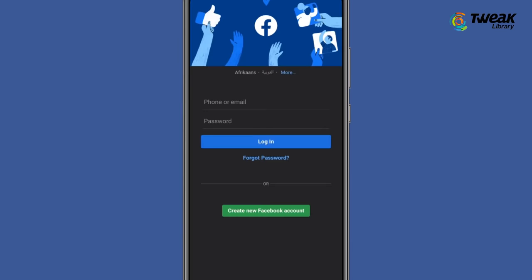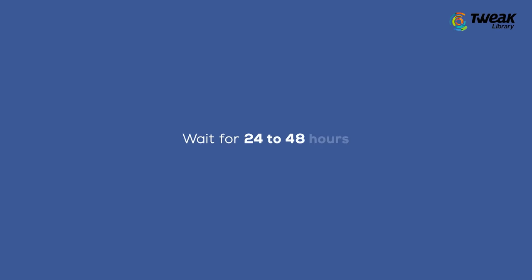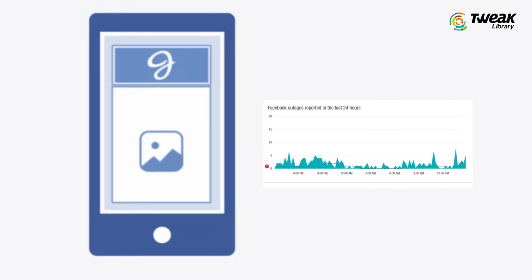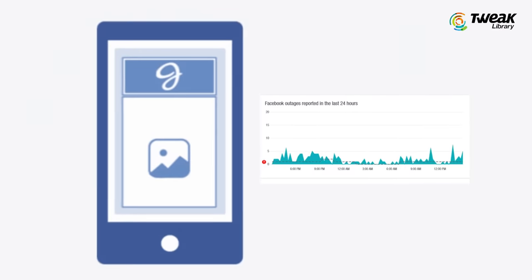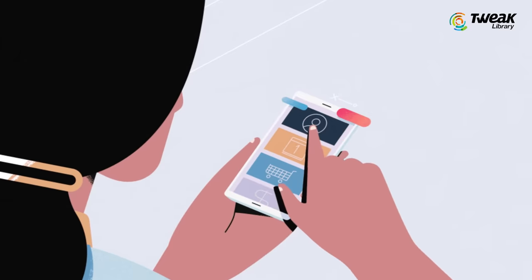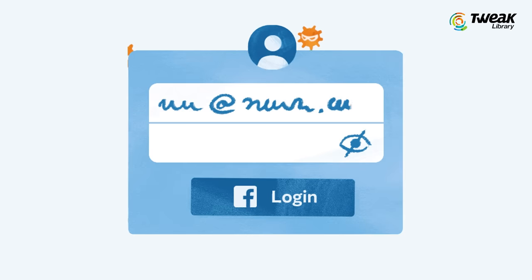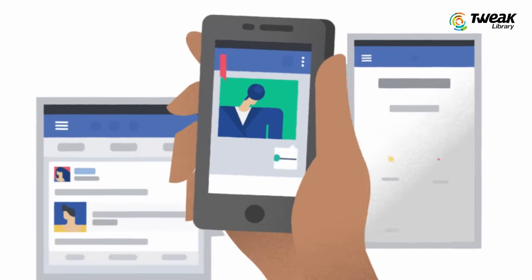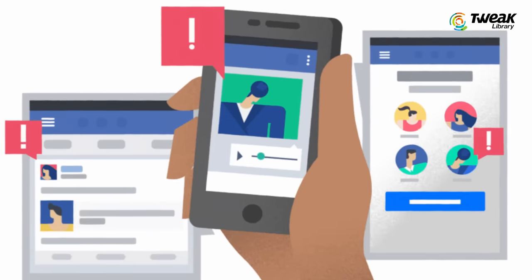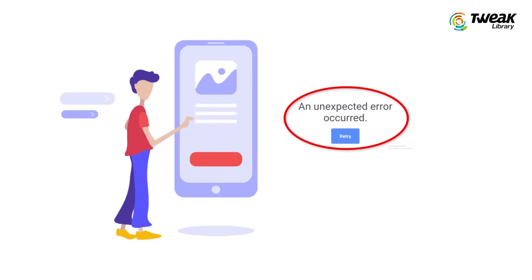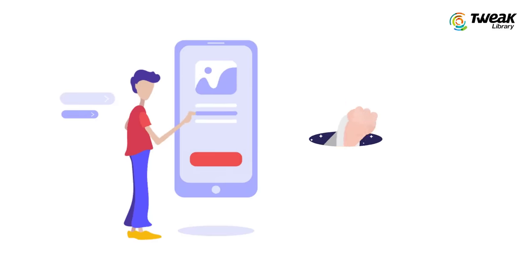The last fix is to wait 24 to 48 hours. If all else fails, it probably means that Facebook is down for everyone. If that's the case, you need to wait for 24 to 48 hours for the servers to be back up. In some cases, you just need to wait a few hours and the unexpected error will fix itself.